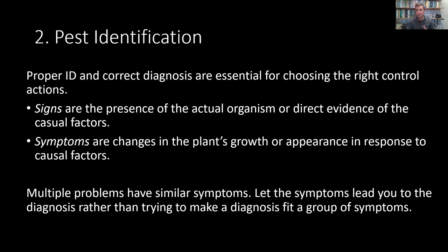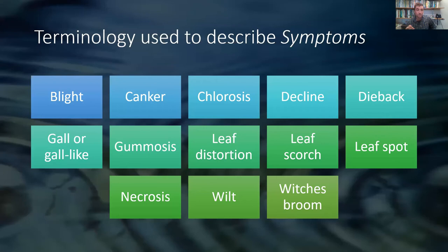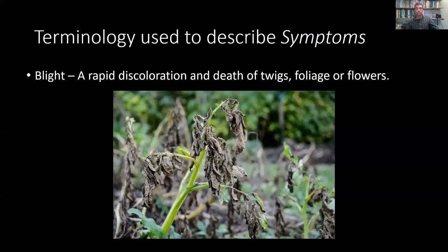There are cases where multiple problems may have similar-looking symptoms, so it can be easy to have a biased view. We want to always approach every scenario with an open mind and only think about the evidence before us. When we talk about plant symptoms, there are a number of terms — think of it like being the doctor and the plant comes to see you. You might detect leaf distortion, necrosis, dieback, and blight. Let's look at some of these common plant symptoms, remembering there are multiple causes for each.